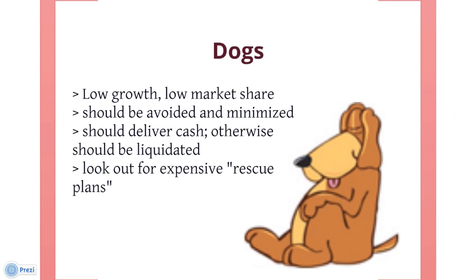Dogs, or more charitably called pets, are units with low market share in a mature, slow-growing industry. Dogs neither generate nor consume a large amount of cash. Though owning a break-even unit provides the social benefit of providing jobs and possible interactions that assist other business units, from an accounting point of view, such a unit is worthless — not generating any cash for the company. Simply put, dogs are cash traps because of the money tied up in a business that has little potential. Such businesses are candidates for potential sale.